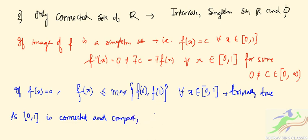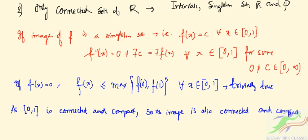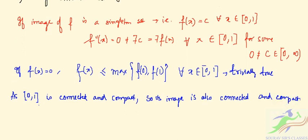So its image is also connected and compact. Let's suppose that we have [a,b], so 0 is mapped to a.